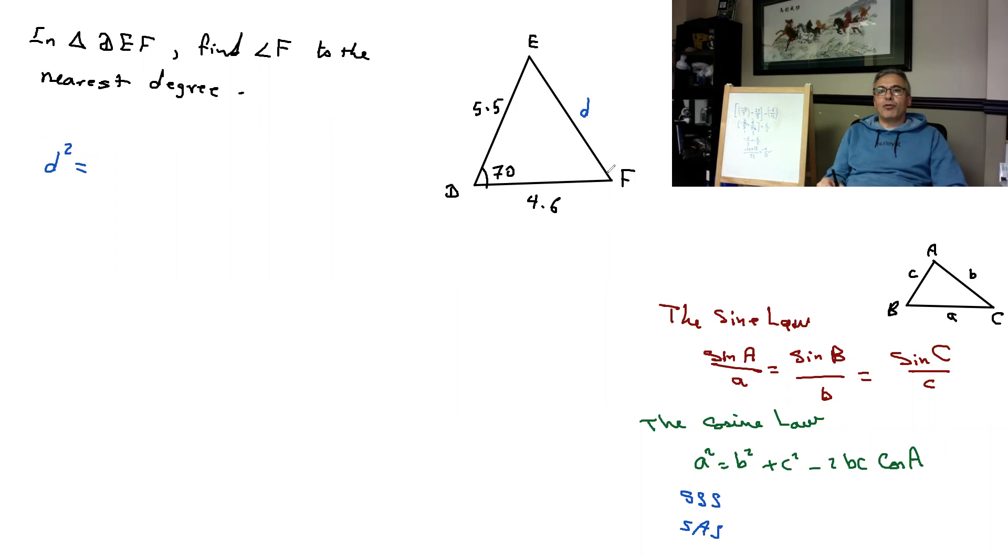If you go D squared, then you substitute these two numbers. So you're going to go 5.5 squared plus 4.6 squared minus 2 times 5.5 times 4.6 times cosine 70 degrees. I'm going to plug that in my calculator, which gives me